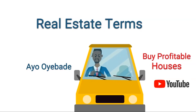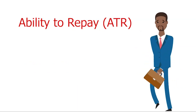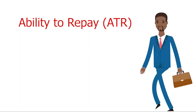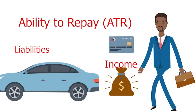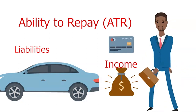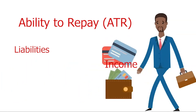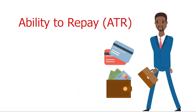Get your notepad, and let's start. Ability to repay, ATR: this implies a loan applicant's capacity to repay his or her debt obligation. Factors considered in the ability to repay include the borrower's income, assets, employment status, liabilities, credit history, and debt-to-income ratio. An applicant with no ability to repay — that is, no ATR — will most likely default in payment.